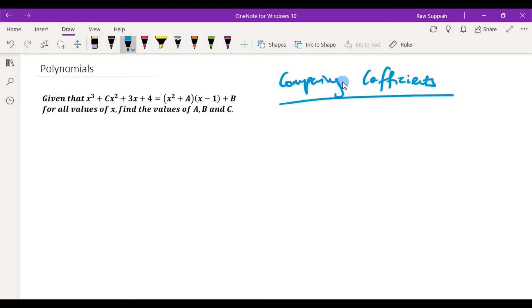Now as you can see we are given an expression over here where on the left hand side we have x cubed plus cx squared plus 3x plus 4, and that is equals to x squared plus a into x minus 1 plus b.